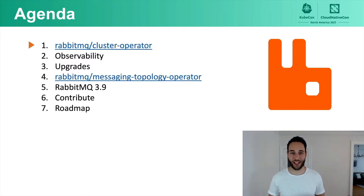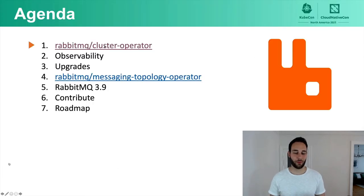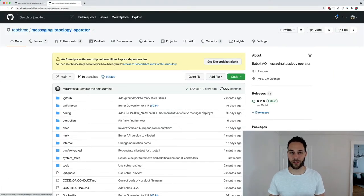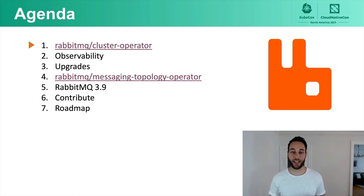The agenda for this session: we'll first understand how the RabbitMQ cluster operator works — a Kubernetes operator that deploys and manages RabbitMQ clusters, which went GA last year. We'll then look at integration with Prometheus and Grafana, how to reliably upgrade RabbitMQ clusters, and explore the messaging topology operator, which got open-sourced this year. We'll also cover new RabbitMQ 3.9 features released in July, contribution opportunities, and the roadmap for the next couple of months.